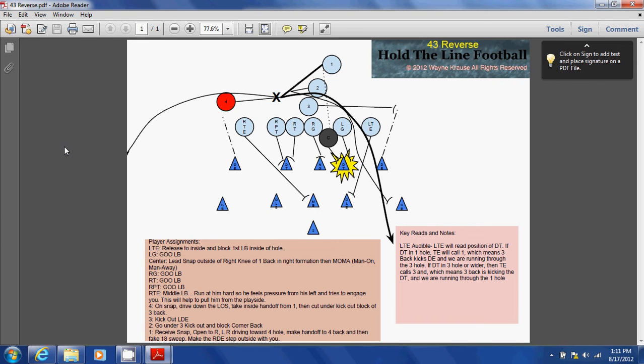We're going to review two additional plays that we run as part of our base series: the 43 reverse and the 22 wedge. Now the 43 reverse, if you go by the numbering system, means the four back will be running the ball through the three hole.